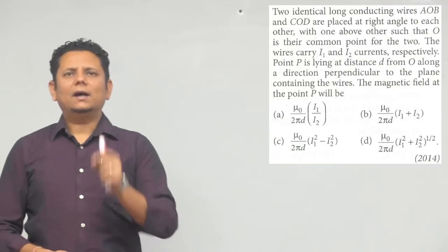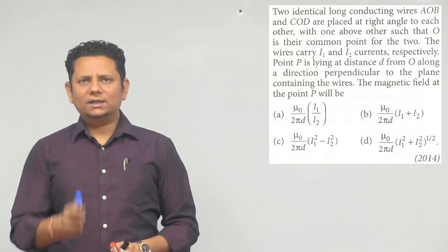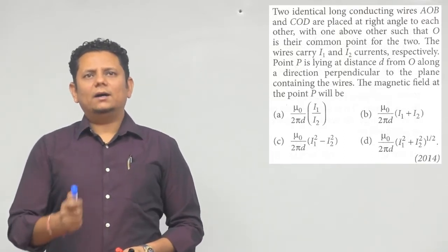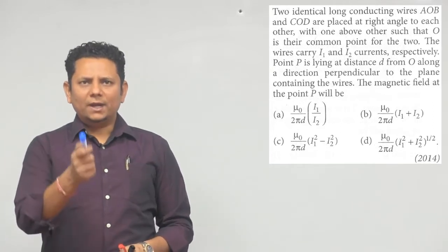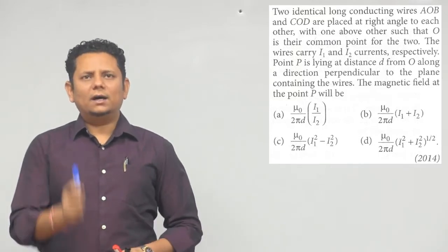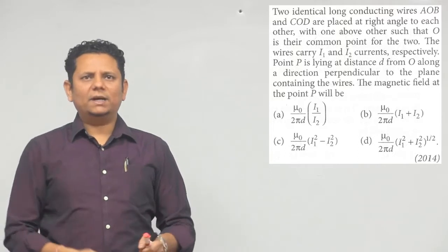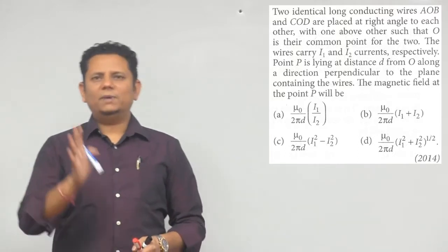The question says two identical long conducting wires AOB and COD are placed at right angles to each other, with one above the other such that O is their common point. The wires carry currents I1 and I2 respectively. Point P is lying at a distance D from O along a direction perpendicular to the plane containing the wires. Find the magnetic field at point P.